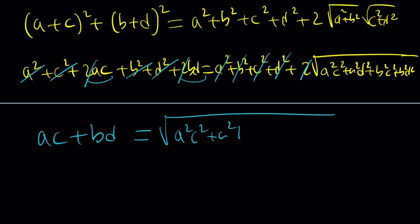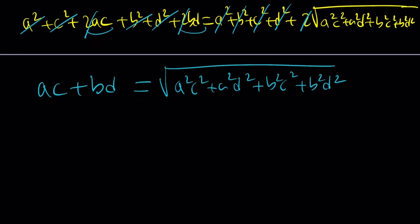AC plus BD is equal to the square root of A squared C squared plus A squared D squared plus B squared C squared plus B squared D squared. Oh, man. That's crazy. But don't worry. We're going to eliminate the radicals one more time. Hit it with the square hammer.